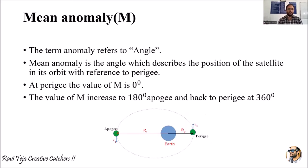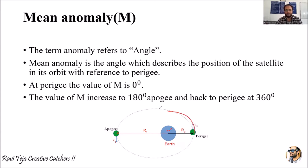The third orbital element is mean anomaly. Mean anomaly 'M' is an angle that describes the position of a satellite in its orbit with reference to the perigee. Before explaining this, we need to understand the perigee and apogee points. Consider the Earth with a satellite moving around it in an elliptical orbit.